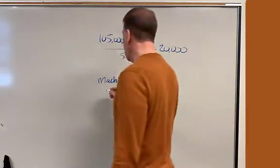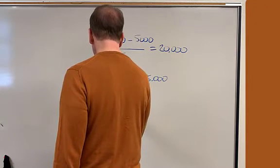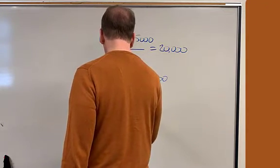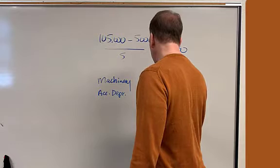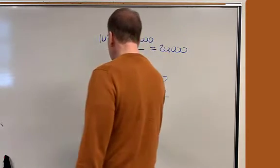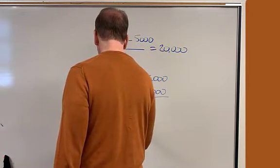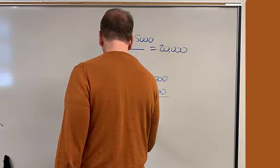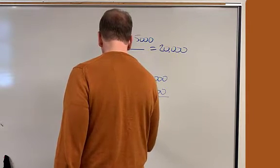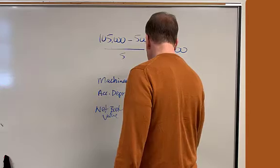After one year, the accumulated depreciation, I'm going to abbreviate here, is $20,000. So then our net book value for this machinery is then $85,000.